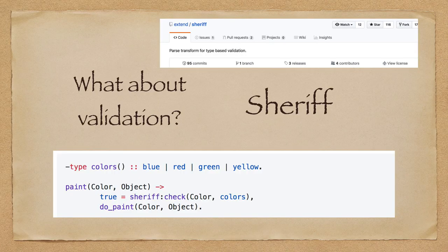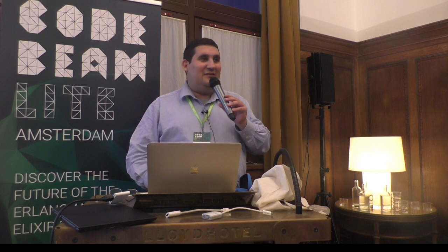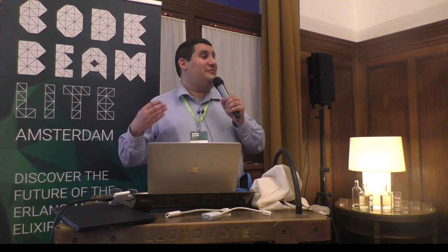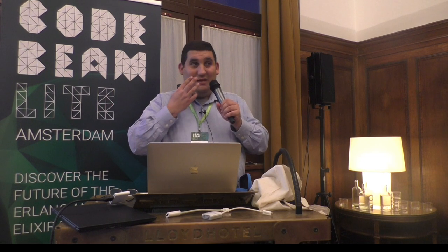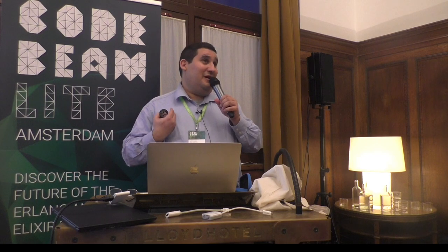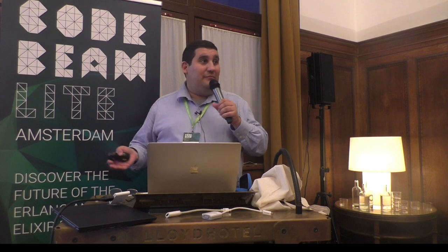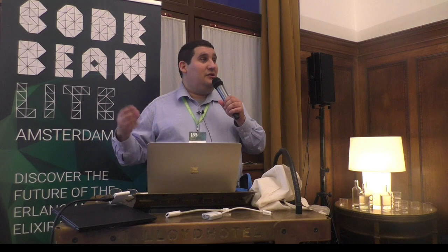Lloyd, who created Cowboy, created a project called Sheriff. Here we have a type 'color' — blue, red, green, yellow — and in this function you can do 'sheriff:check(colors, color),' and it'll use a parse transform to actually validate that the value color is one of those four atoms. That's awesome — only one problem: the last commit was in 2013. I'm pretty sure this was somebody's summer code project, and then nobody ever used it again. You can find it on GitHub, but I personally would not use it unless I was prepared to maintain it myself. It is illustrative as to what types of things we can do.